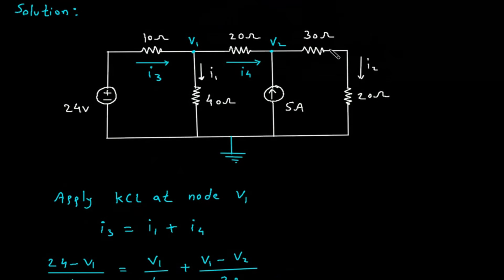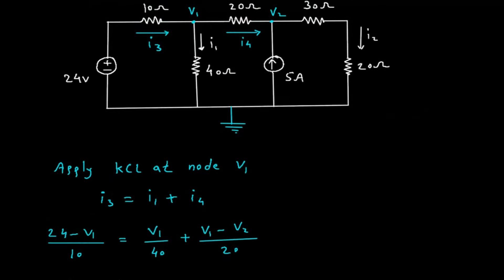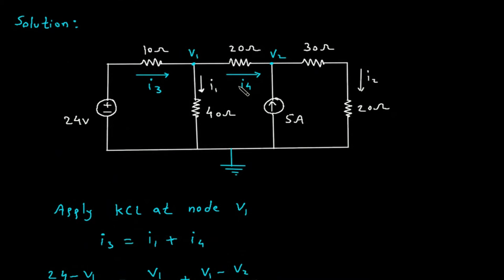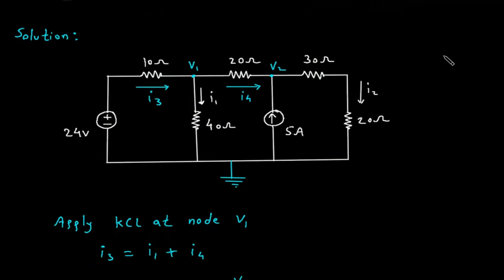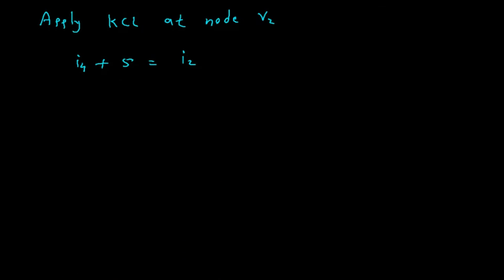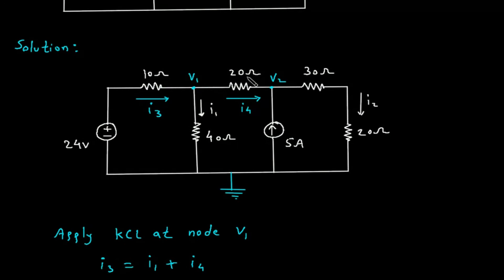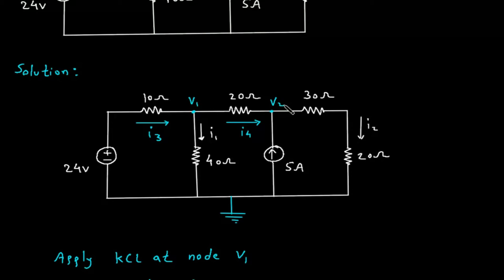Now we will apply KCL at node V2. The entering currents at this node are I4 plus 5, so I4 + 5 = I2. I4 is (V1 − V2)/20, and I2 is V2/(30 + 20) = V2/50.